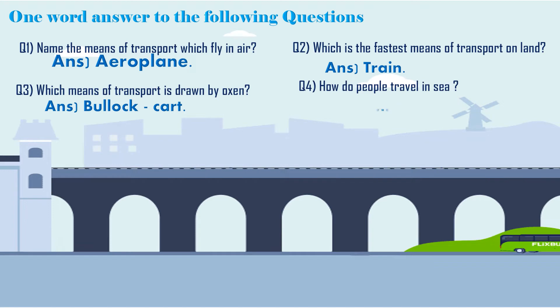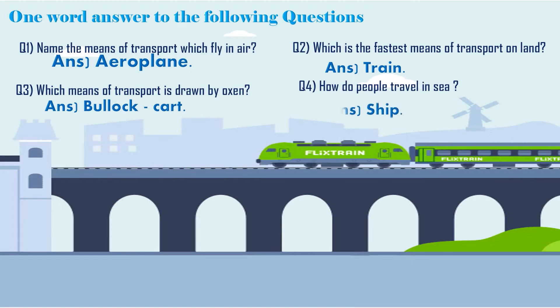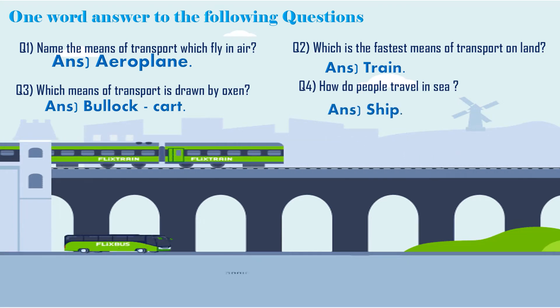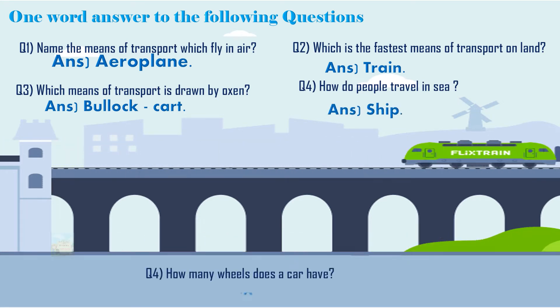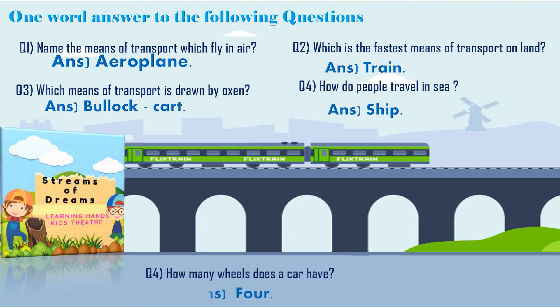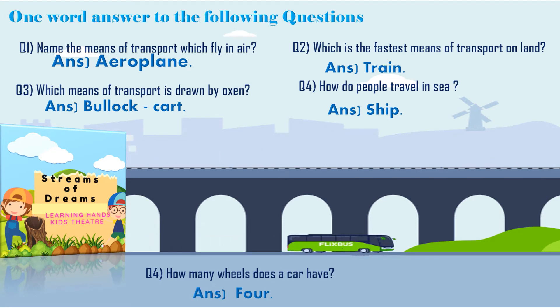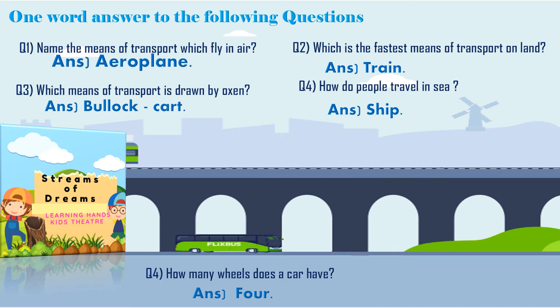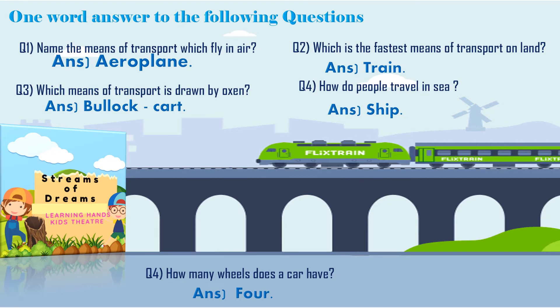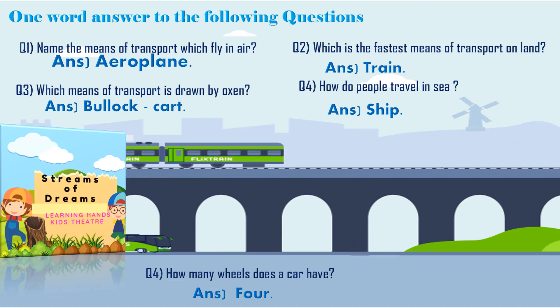Which means of transport is drawn by electricity? It's a bullet train. How do people travel in sea? It's a ship. How many wheels does a car have? It's four.